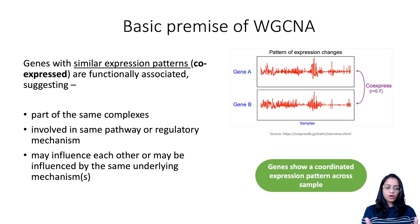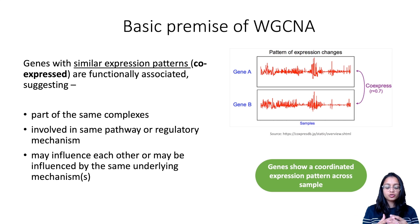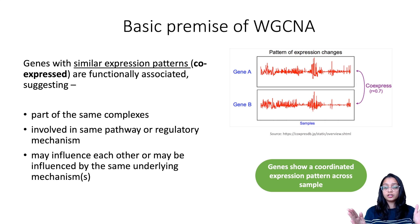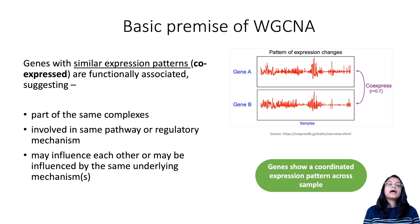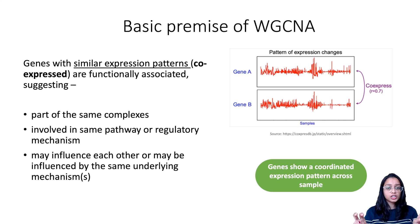The basic idea behind weighted gene co-expression network analysis is that genes with similar expression patterns are functionally associated. When I say genes with similar expression patterns, I mean genes that are correlated — when the expression of one gene goes up, the expression of the other goes up as well; when one goes down, the other goes down. When genes have similar expression patterns, it means they are functionally associated.